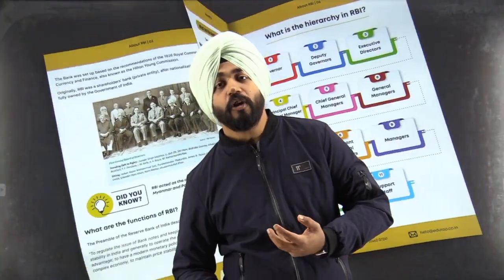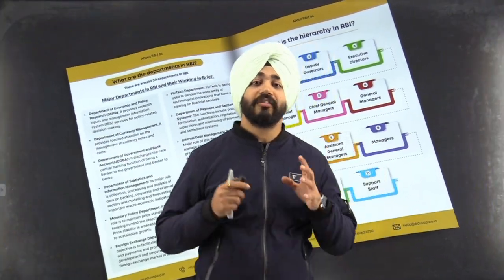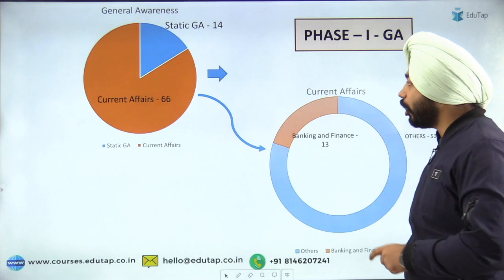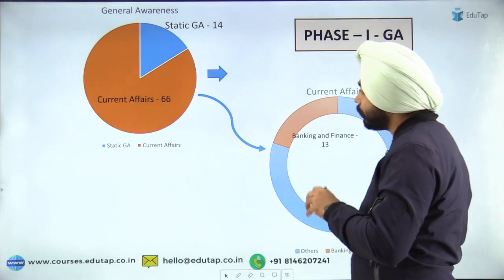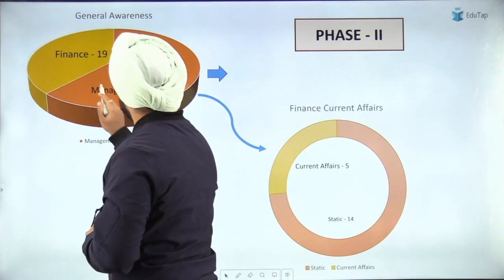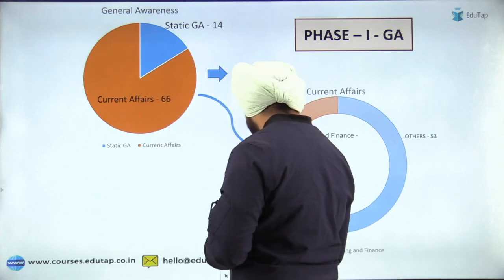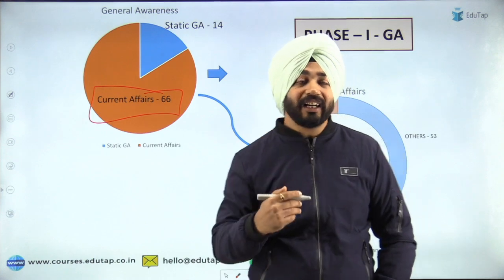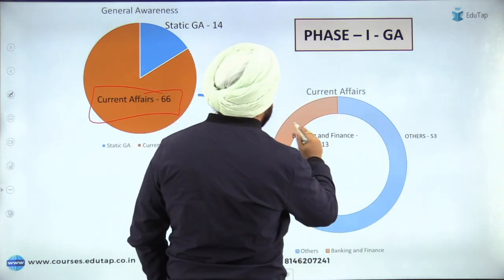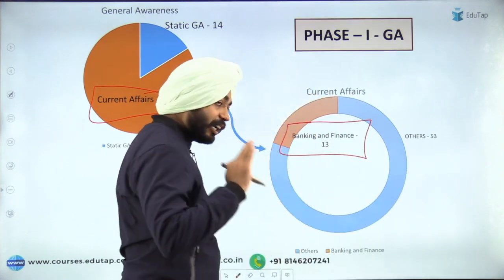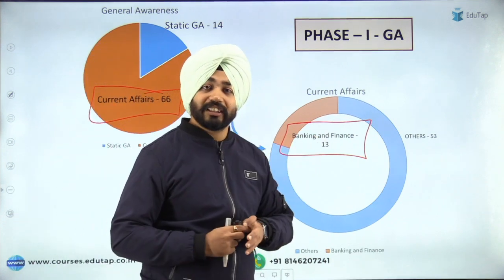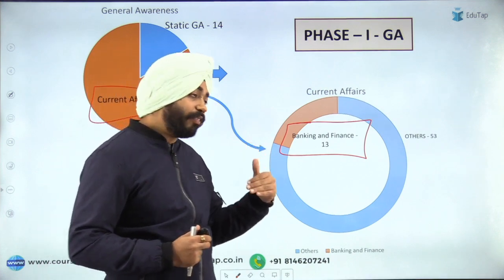Now, the first question: why finance current affairs? We need to understand the weightage of finance current affairs in your examination. In Phase 1, there were a total of 66 questions from current affairs. Out of these 66 questions, 13 questions were directly from banking and finance current affairs. I will be explaining the specific questions that have been asked.